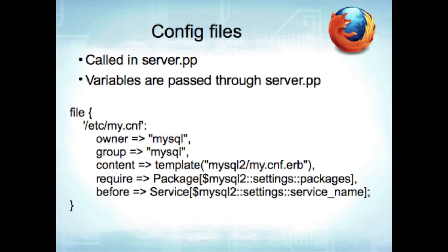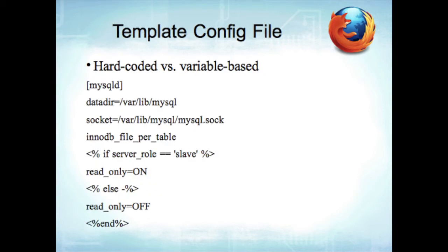Here's what you'll literally see in our ERB file. Hard-coded variables: the mysqld section, data dir, socket, buffer pool location, innodb_file_per_table — that's not going to change. Then you look at variable-based things — anytime you see a percent sign, that came from a variable. Inside server.pp, we have a section that determines server role — either master or slave (or master-master). Server role is just a string. That's one of the manual parts: if you're dev1, we decide you're the master; if dev2, you're the slave. When we failover, we change Puppet to say what's master and what's slave.